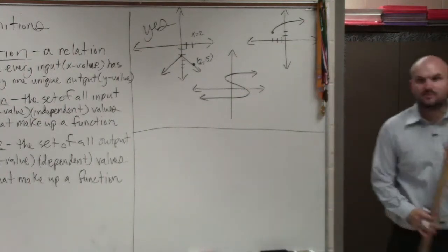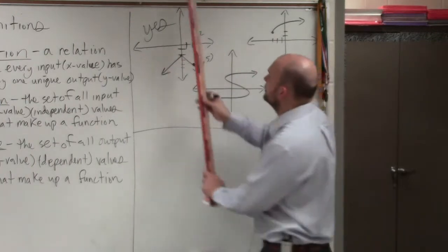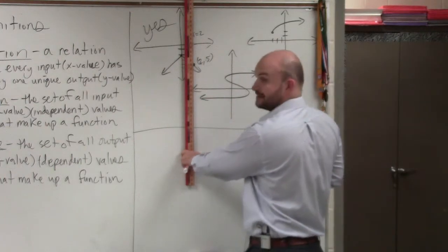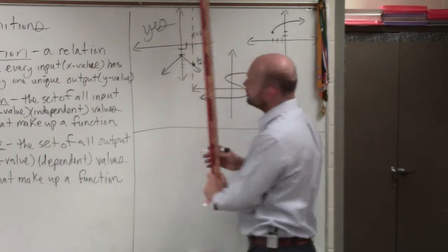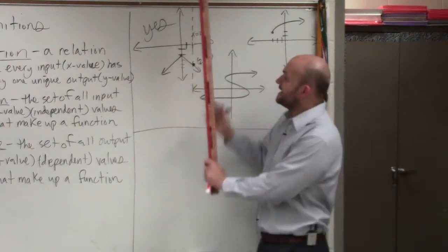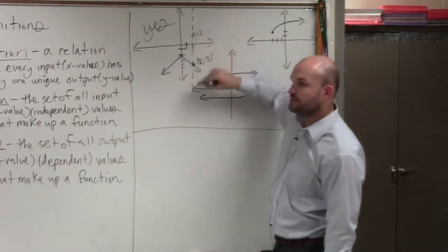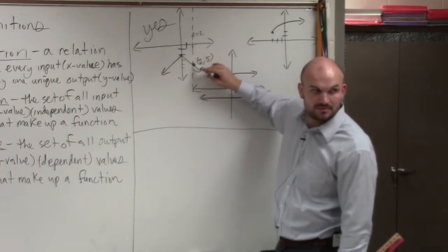Now, why does that work with the vertical line test? What the vertical line is, basically, if you were to graph the line x equals 2, that would create a vertical line, right? And what you guys can see is the vertical line is just a visual way for us to make sure that when x equals 2, there's no other points on the graph except for that one.